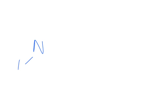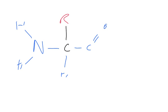An amino acid forming a peptide bond: we have a nitrogen, a central carbon, an R group, another hydrogen, carbon, double bond, oxygen, oxygen, hydrogen — and that's the carboxyl group.